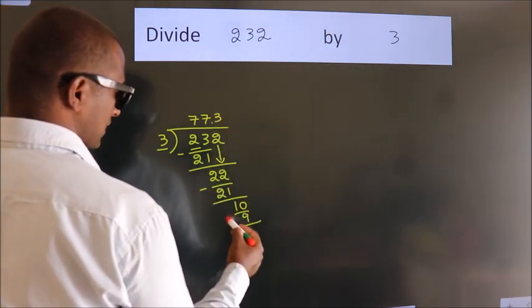So, 10. A number close to 10 in the 3 table is 3 times 3, which is 9. Now we subtract. We get 1. Now you observe.